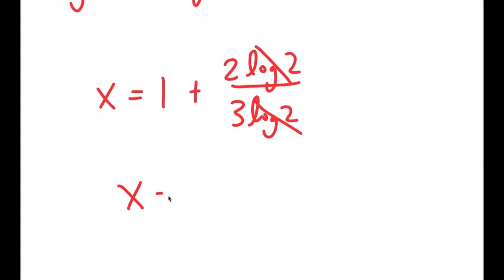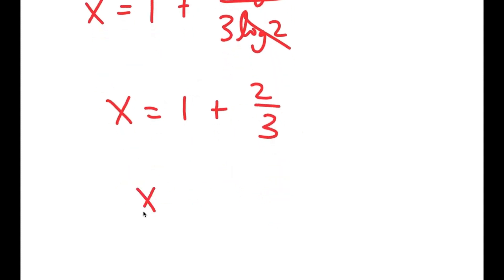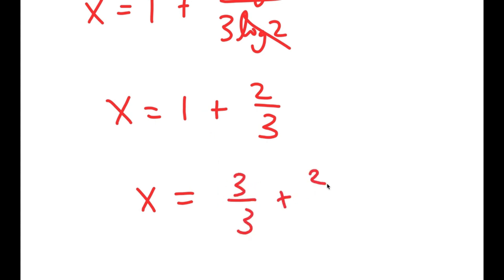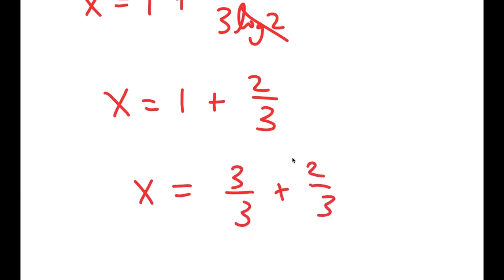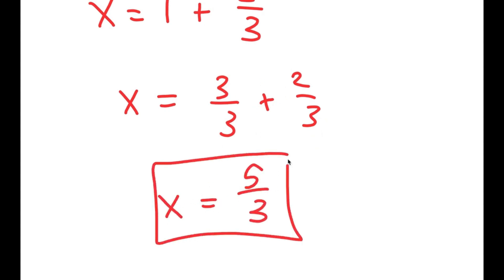These two log 2 terms cancel out, and I get x is equal to 1 plus 2 over 3, which is equal to 3 over 3 plus 2 over 3, which is 5 over 3. So x is 5 over 3.